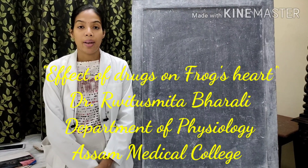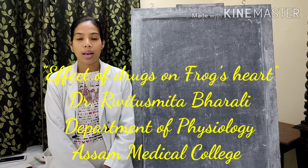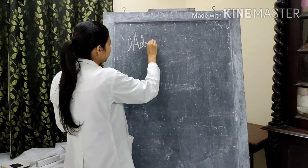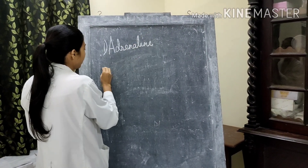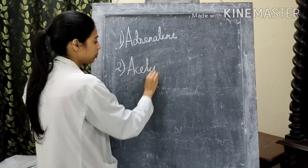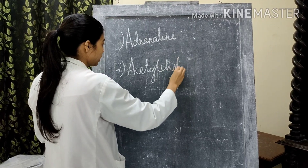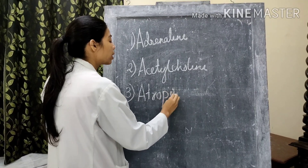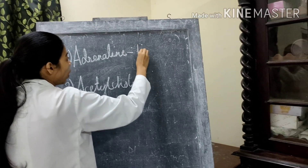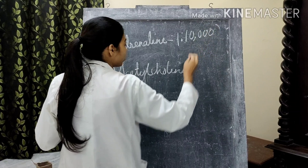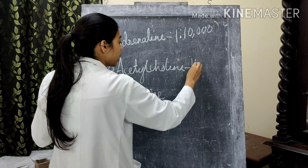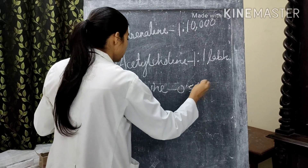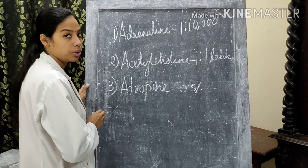Now we will talk about the effect of drugs on the frog's heart. For this, we have selected three drugs. One is adrenaline. Next is acetylcholine. And the third drug is atropine. Adrenaline we take in the ratio of 1 to 10,000. Acetylcholine we take in the ratio of 1 to 1 lakh. And atropine we take as 0.5% solution. So that is the strength of the solutions we will take.